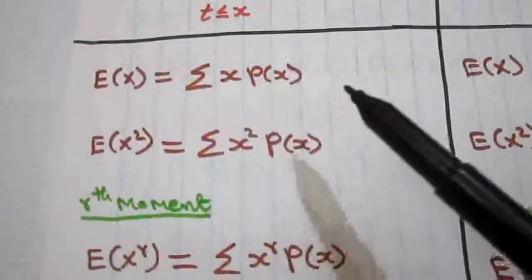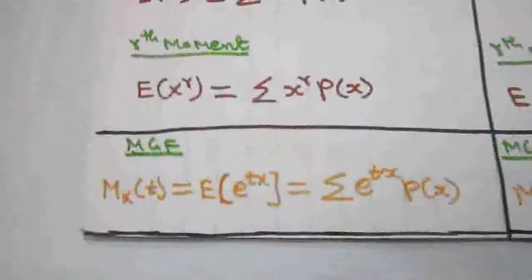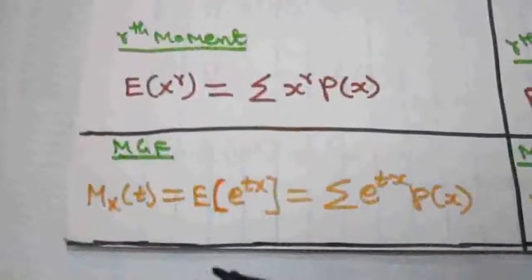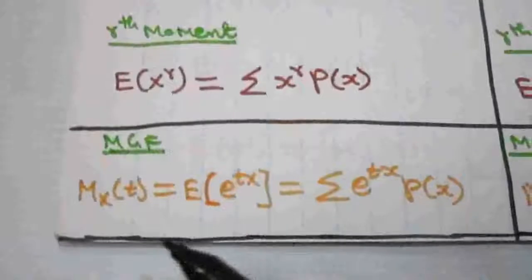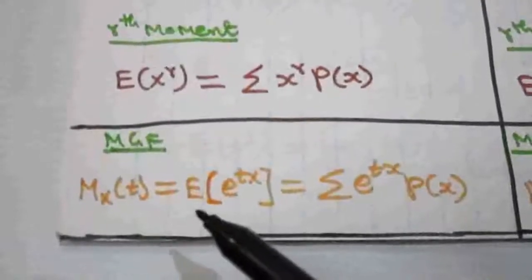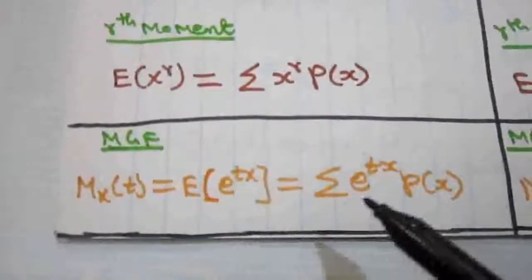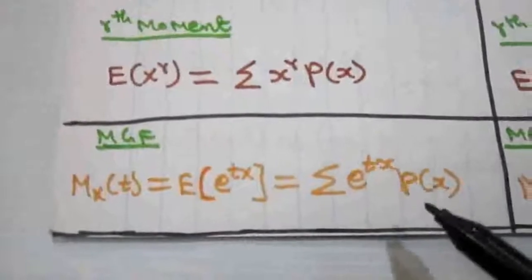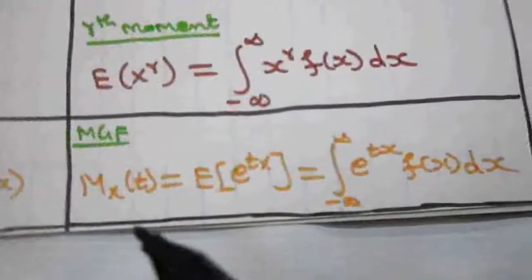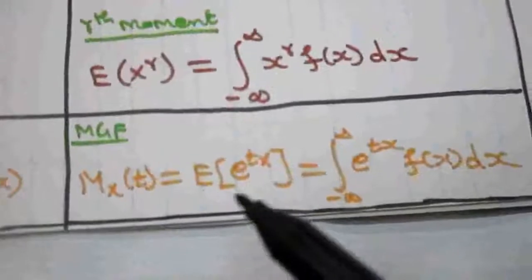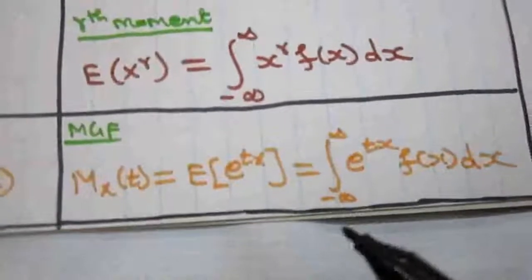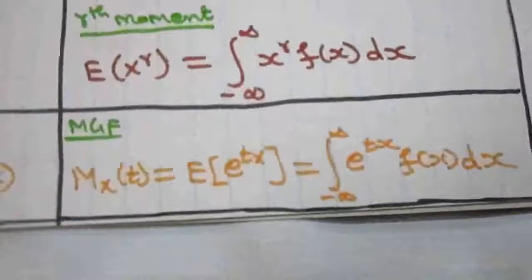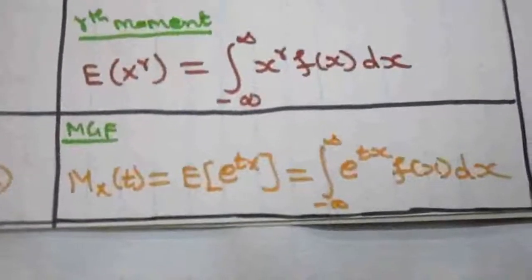Another formula is the moment generating function, MGF. For a discrete random variable, M_x(t) = E(e^(tx)) = summation of e^(tx)·p(x). For a continuous random variable, M_x(t) = E(e^(tx)) = integral from minus infinity to plus infinity of e^(tx)·f(x) dx.